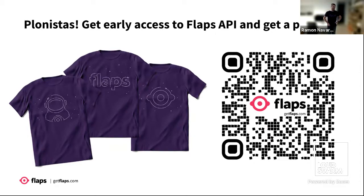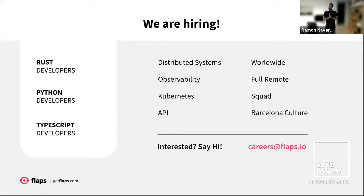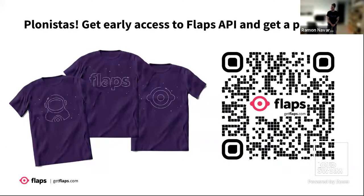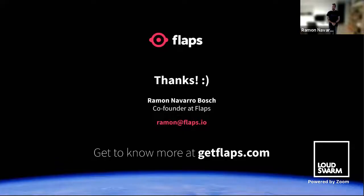Give some time to take a picture of the QR. And it's really important — we are hiring. We want to grow really fast, so we need a lot of developers: Rust, Python, and TypeScript developers. Distributed systems, observability, Kubernetes — as you can imagine. We are a fully remote company organized in squads with a strong personal culture — we are Catalans and we always will be. If you're interested, just send a mail to careers at flaps.io. I really hope you enjoyed it. Sorry for explaining so much about Flaps, but I think it's super interesting. I'm super proud about what we've been able to achieve and I really want to open source it soon. Thank you so much.